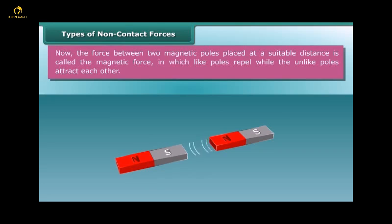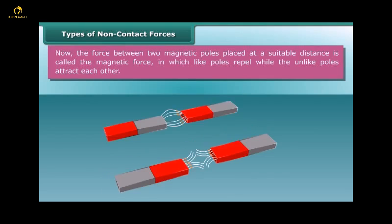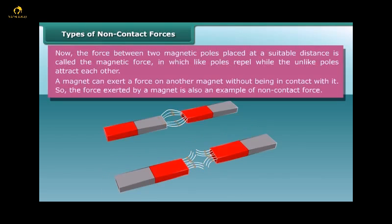Now the force between two magnetic poles placed at a suitable distance is called the magnetic force, in which like poles repel while the unlike poles attract each other. A magnet can exert a force on another magnet without being in contact with it. So the force exerted by a magnet is also an example of non-contact force.